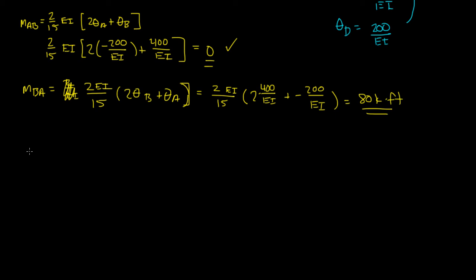Okay. MBC, again, same thing. You just plug in the theta values for your equation for MBC. I'm actually not going to do it, but I'll give you the answer. The answer is negative 80 kip foot. And this kind of makes sense because if we look at MBA and MBC, you have one 80 kip foot going the direction we assumed and one opposing it because of this negative sign.